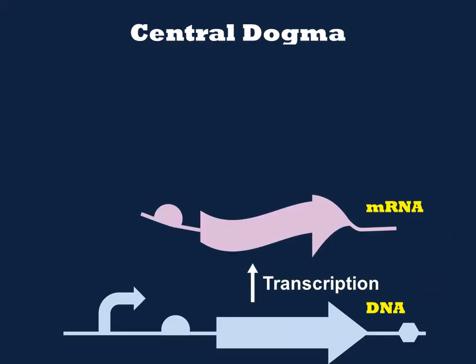RNAs and DNAs differ by only one kind of base: DNAs use T and RNAs use U. Because the molecules are so similar, a DNA sequence can be trivially copied from a DNA molecule to an RNA molecule. Within the cell, subsequences of the larger genomic DNAs called genes are copied as RNA molecules called mRNAs in a process called transcription.